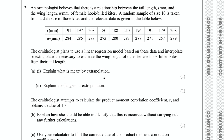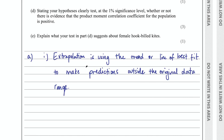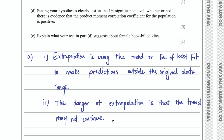Extrapolation is using the existing data to make predictions about data outside of that original set of data. For example, if you notice a trend with this sample of 10, you might make a prediction about a kite with a longer or shorter tail length than what was measured. The danger is it becomes unreliable because you're making predictions, and every time you do so outside of your data, there's a level of uncertainty.